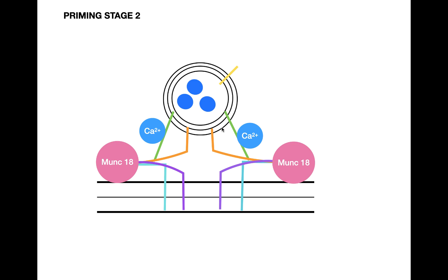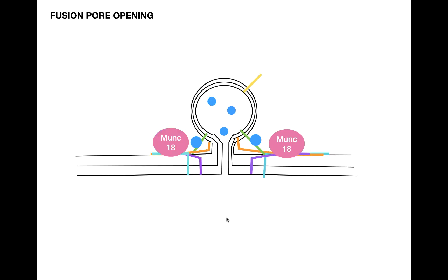When synaptotagmin binds to the complex, the snare proteins pull the vesicle closer and closer to the presynaptic membrane, allowing a fusion pore to open — this is the fusion pore opening stage. The vesicle fuses with the presynaptic membrane, forming what is called an omega complex because it looks like the Greek letter omega. When the fusion pore opens, neurotransmitters start to be released into the synapse.